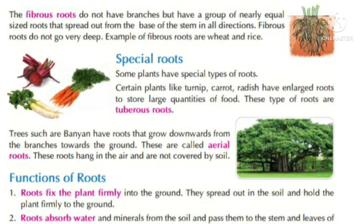Kuch plants mein khas jadein hoti hain. Kuch plant jaise ki turnip, carrot, radish — inme roots jo hain kaafi badi dikhti hain, kyonki wahan large quantity mein khana jo hai store karti hain. Aur isi tarah ke root ko tuberous root kahte hain.